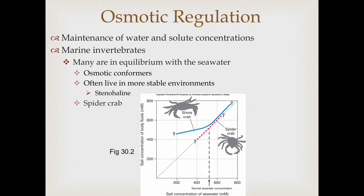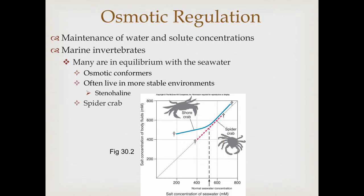An animal that fits the definition of an osmotic conformer is the spider crab. In this figure, the red line indicates where it can live — showing the salt concentrations of the seawater where it can live, and that it has the same salt concentration in its body fluids. It's simply conforming to the area it's living in. But there's a very narrow range of salt water concentrations it can tolerate — if it gets too high or too low, it becomes lethal.